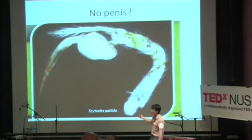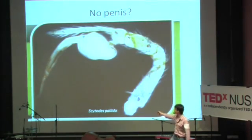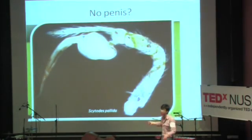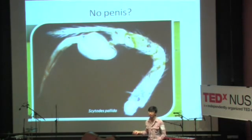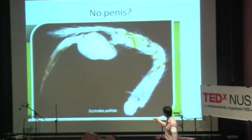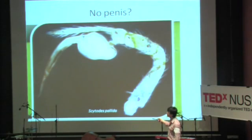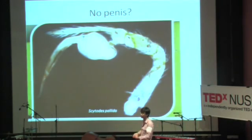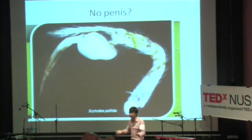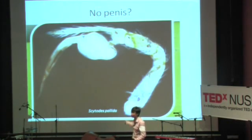Here is an example: Scytodes pallida, a local species called the spitting spider. All this white stuff is sperm — I killed the animal right after it was getting ready, so all this white stuff is stuck getting ready to go to the female.